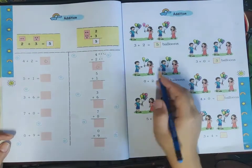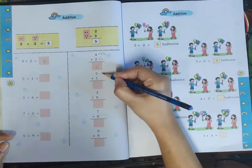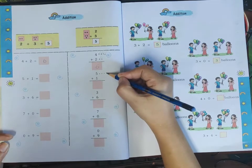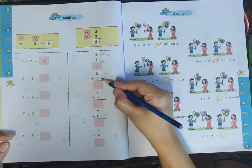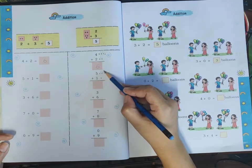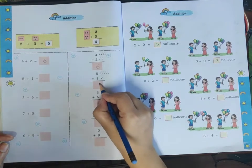Next question: five plus one. Look at the five dots here, and now we add one more dot. Let me count: one, two, three, four, five, six. Five plus one equals six.